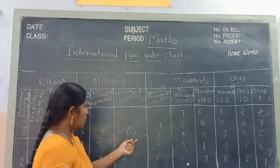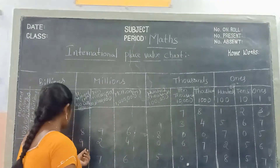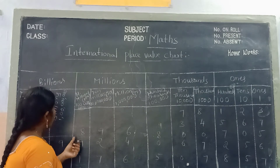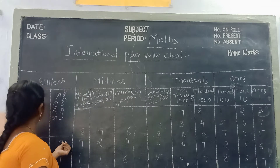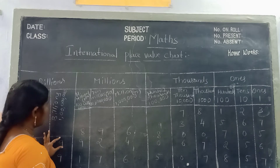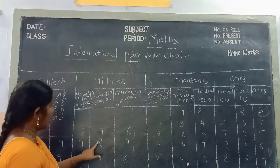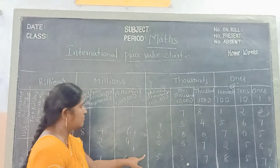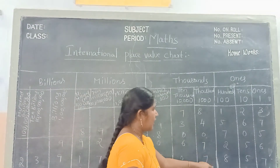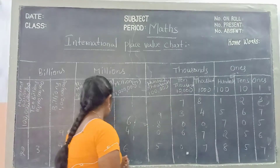Next one is: 9, 2, 4, 0, 6, 7, 2, 5, 6. See children, how to read this one. Nine hundred and twenty-four million, sixty-seven thousand, two hundred and fifty-six.